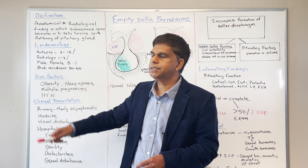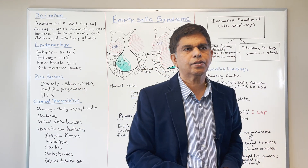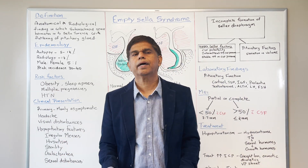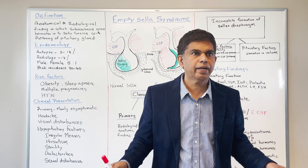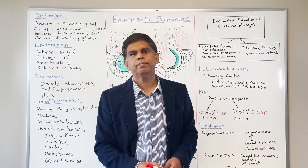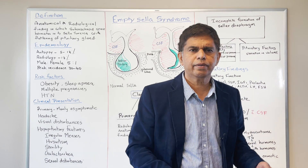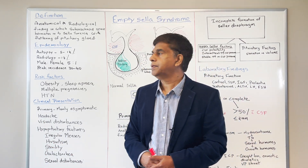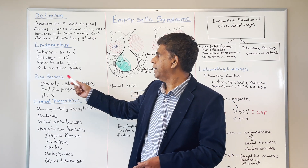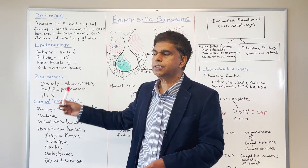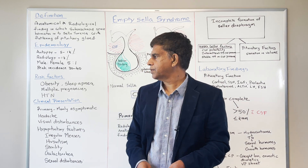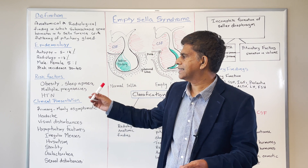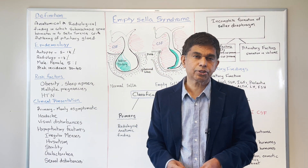Let's look at some epidemiology. In autopsy studies they take about 100 people and see the finding, meaning most of them remain asymptomatic. In radiology, about 12% — they might be doing an MRI of the brain for something else and then get a finding of Empty Sella. The female-to-male ratio is about 5 to 1, and the peak incidence is between 30 to 40 years. Risk factors include obesity, sleep apnea, multiple pregnancies, and hypertension.